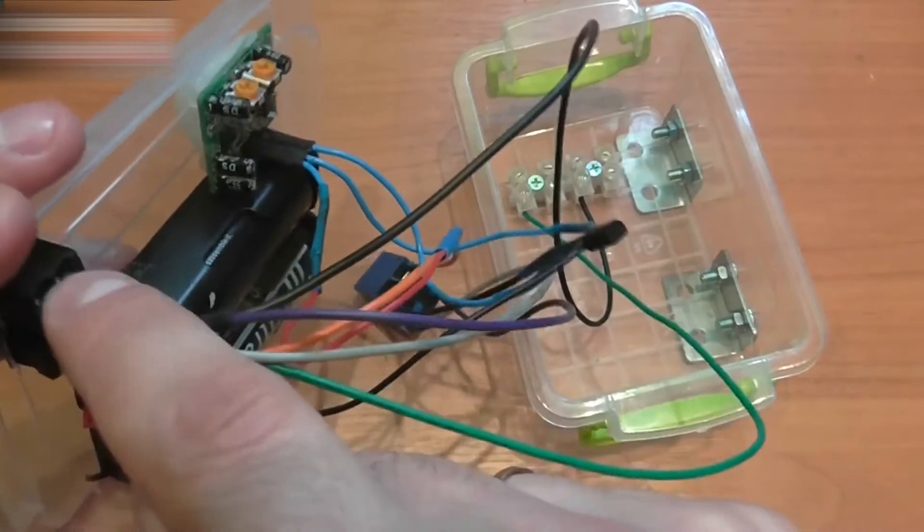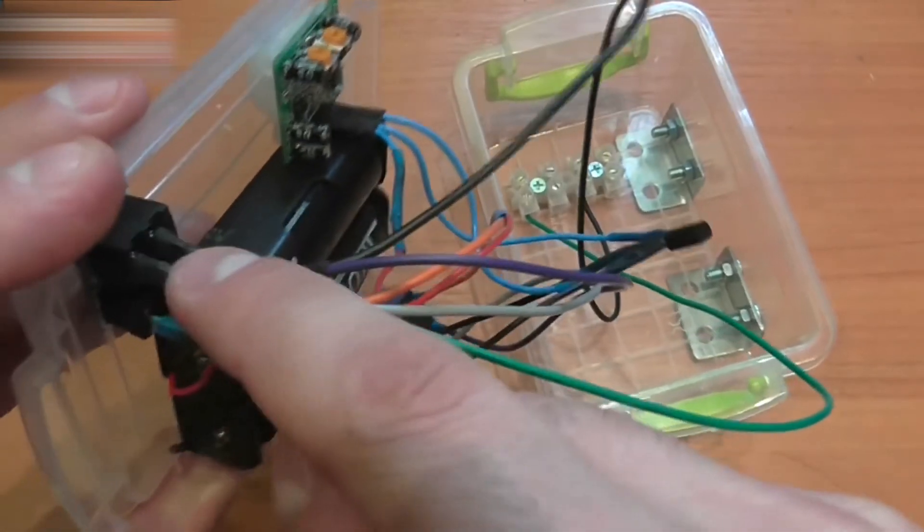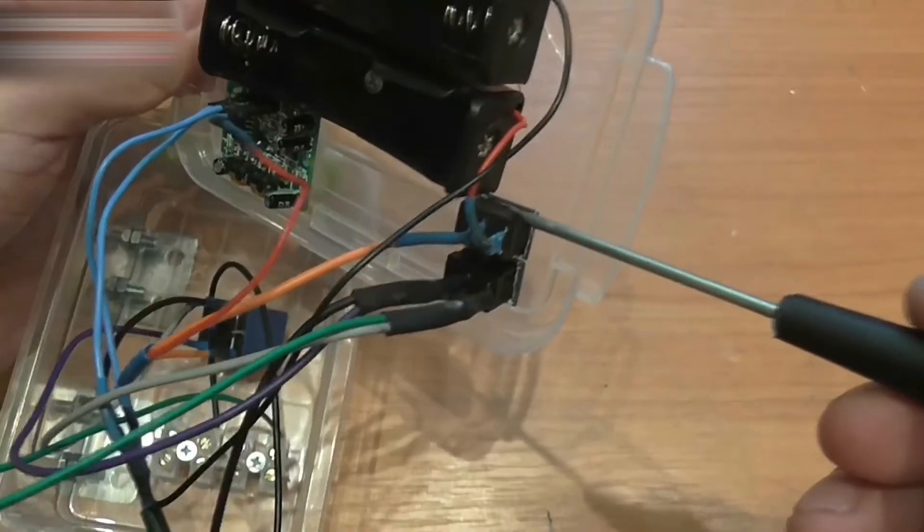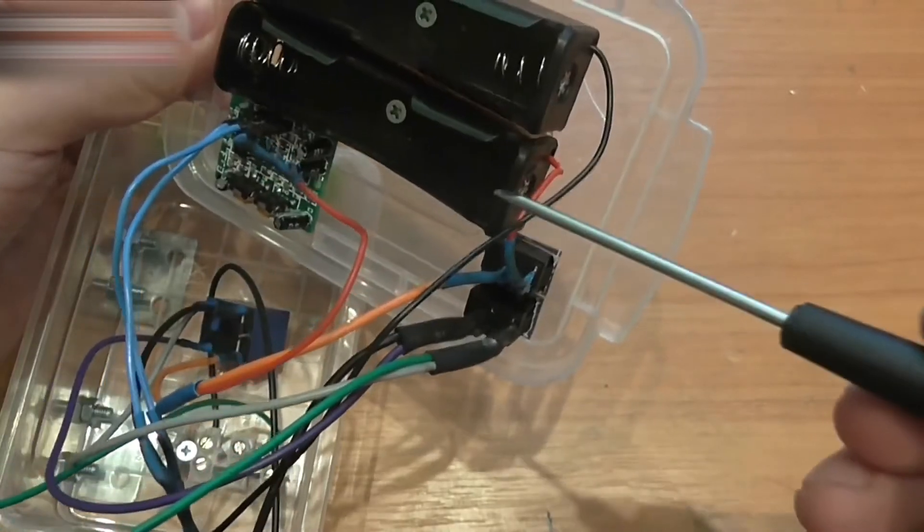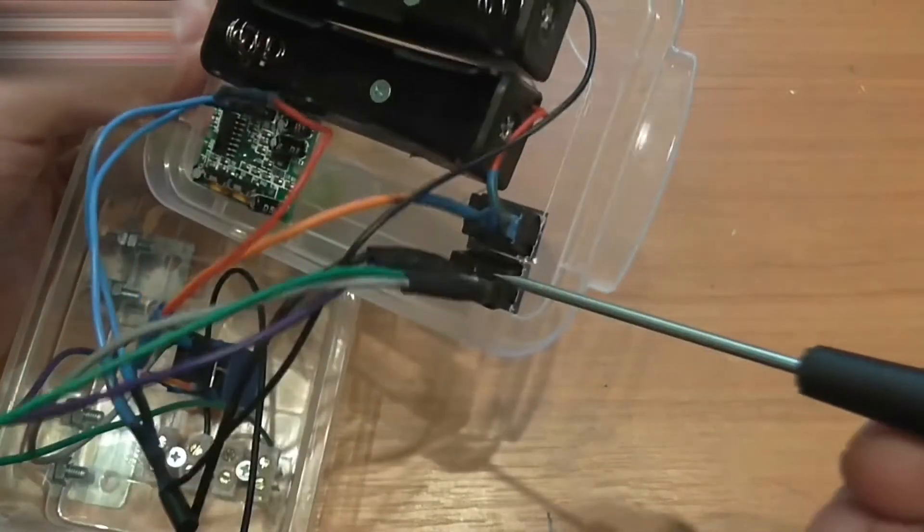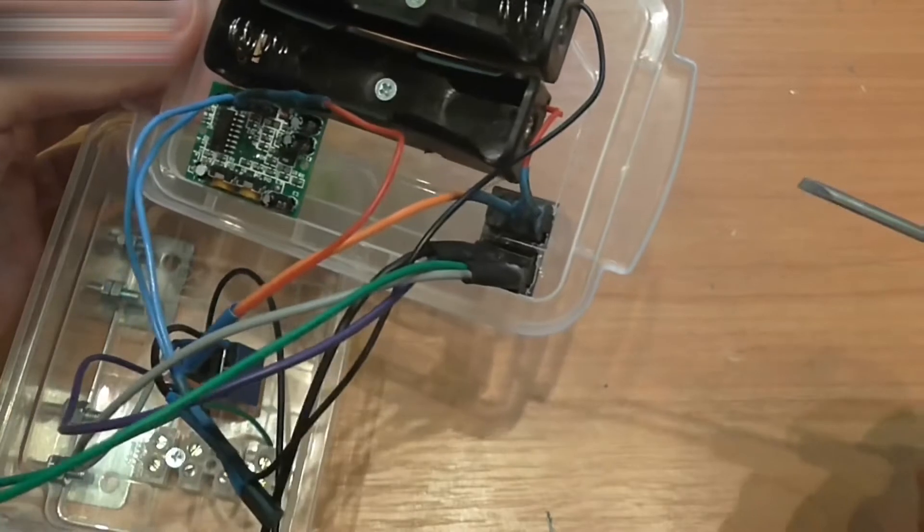Insulate everything with a heat shrink tube, because the voltage here will be 220V. The top switch should turn everything off, and the bottom switch should shunt the relay so the lights can be turned on without this device too.